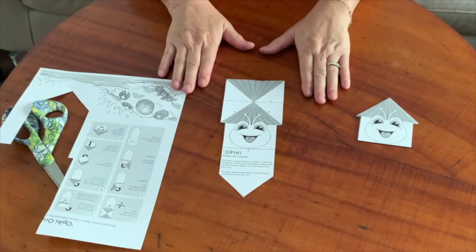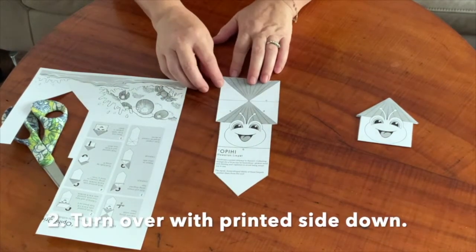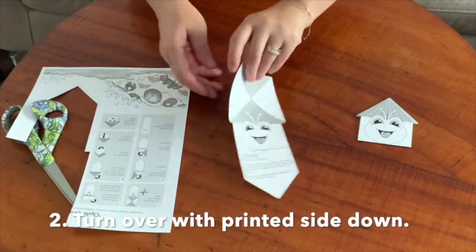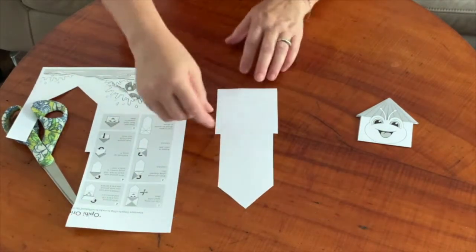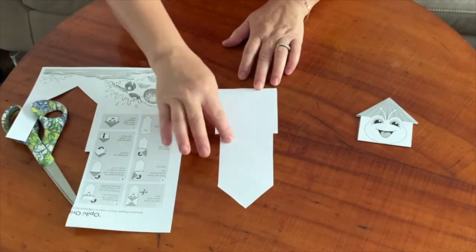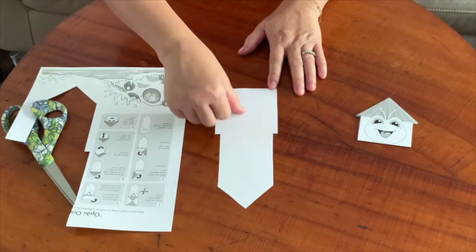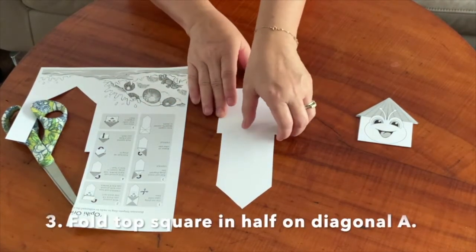Turn your origami over so the printed side faces down. You see how there's an upper square and a lower part that looks kind of like an arrow pointing down. We're going to do the first fold which is along the diagonal fold A along the square.